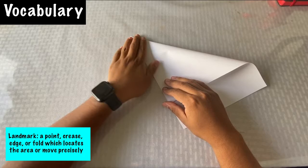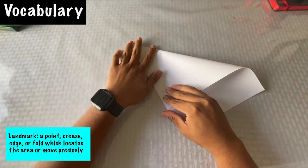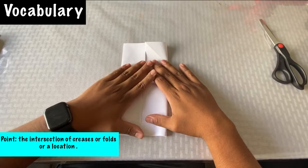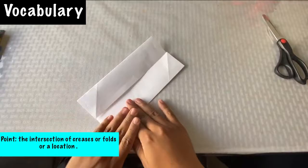This fold that I'm doing is a landmark because it's meeting one point to another. The next vocab word is point, which means the intersection of creases or folds or a location. So this fold that I'm doing is an intersection of creases.